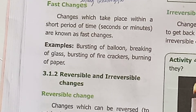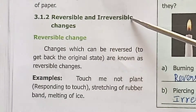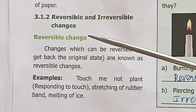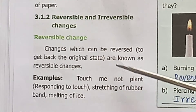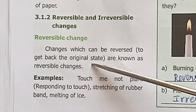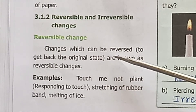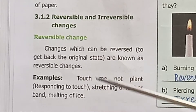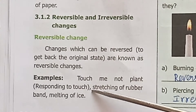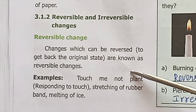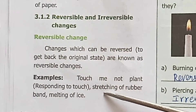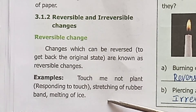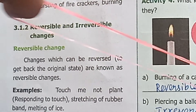Reversible and irreversible changes — changes which can be reversed are known as reversible changes. A touch-me-not plant responds to touch and then changes back. Stretching of a rubber band is a reversible change — the size increases when stretched but returns to original size when released.